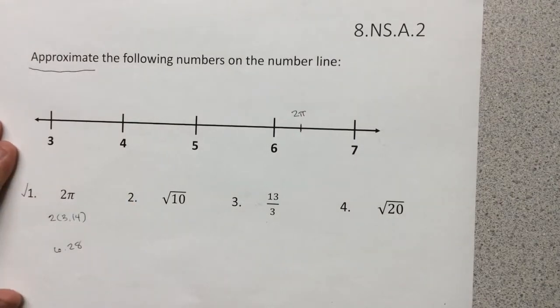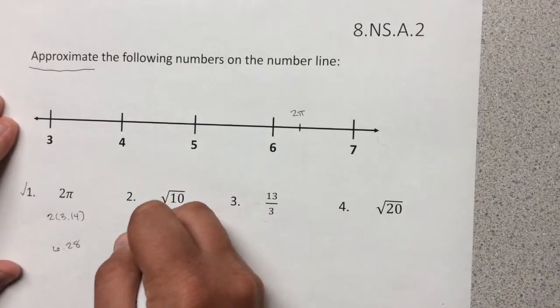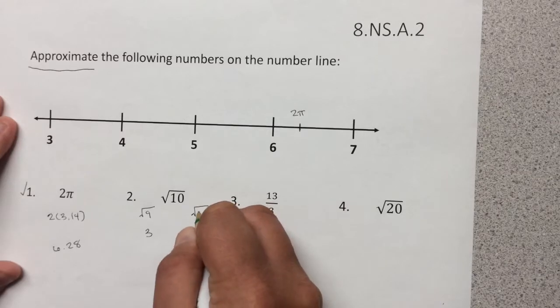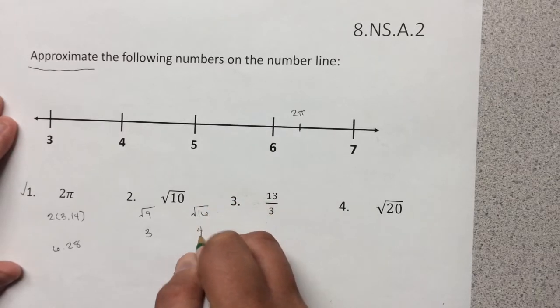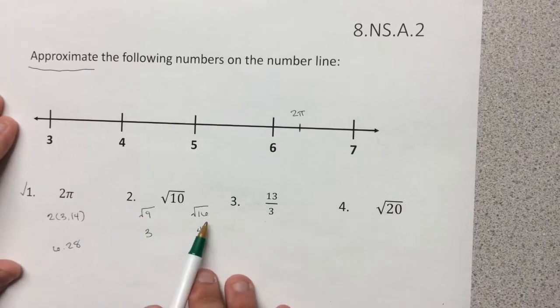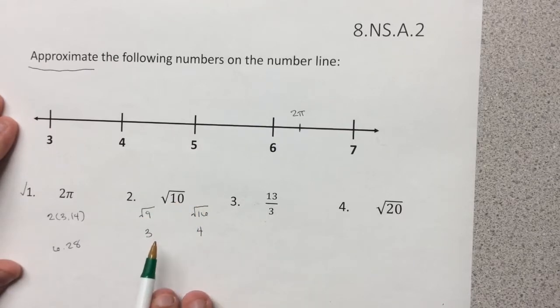Number two, the square root of 10. I can approximate square roots by knowing what my perfect squares are. So I know that the square root of 10 is in between the square root of 9, which is 3, and it's in between the square root of 16, which is 4. Because 10 is a lot closer to 9 than it is 16, I know that the square root of 10 is going to be a lot closer to 3 than what it is 4.